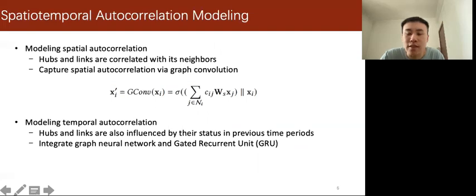In the second task, we aim to learn unified route representation. As we know, hubs and links are correlated with their neighbors, so we apply graph neural network to capture spatial autocorrelations.